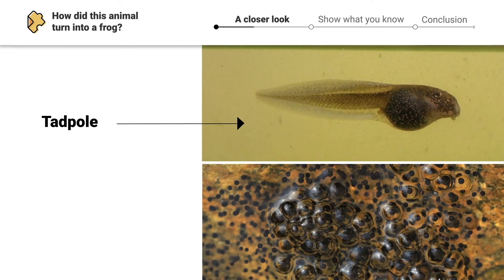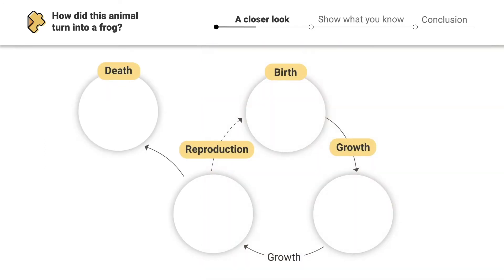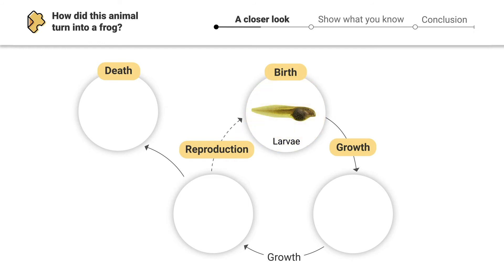Tadpoles hatch from small, soft eggs, just like these. Based on the life cycle of amphibians, what can we call the tadpole? When amphibians are born, they're called larvae, so this tadpole we call a larva.